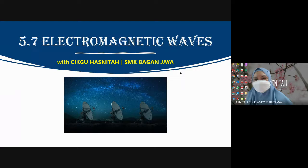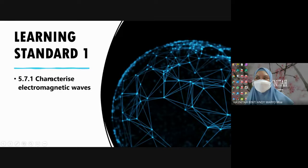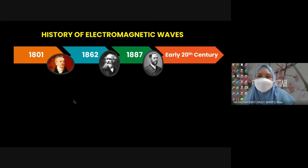In Content Standard 5.7, there are only three learning standards, which is very simple and short. The first one, 5.7.1 - each and every one of you must know how to characterize electromagnetic waves. Let us take a look at the history first on the development of electromagnetic waves.